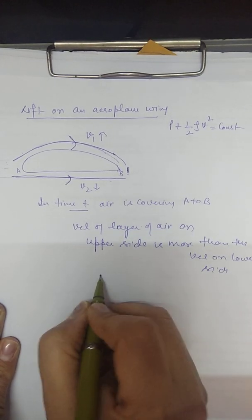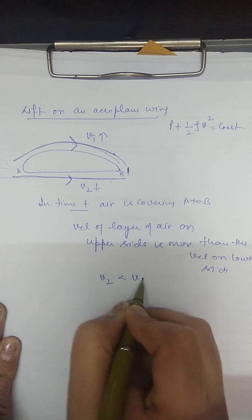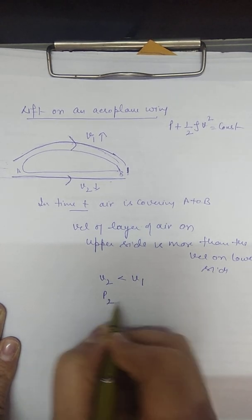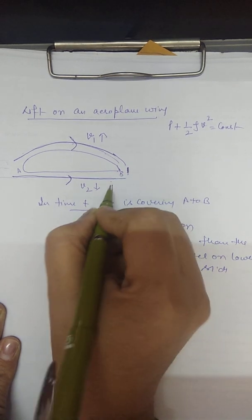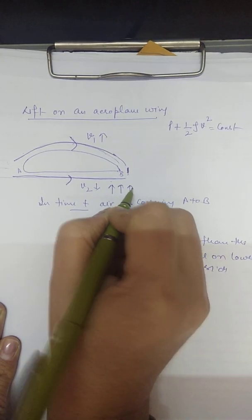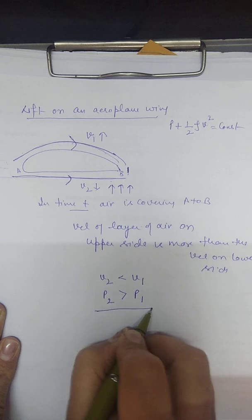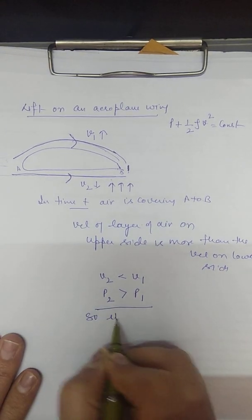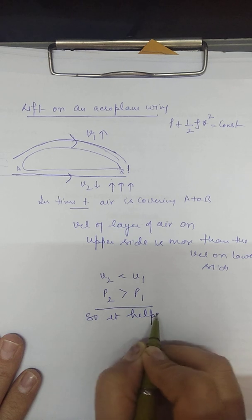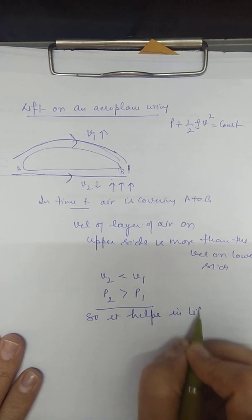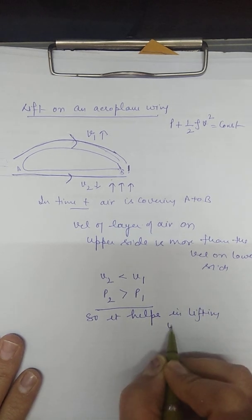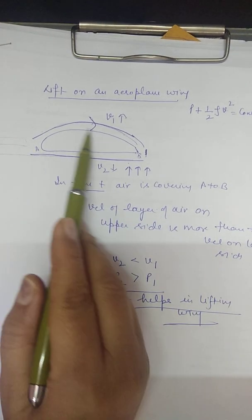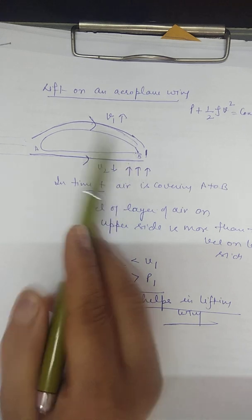This means V2 (lower) is less than V1 (upper). Therefore, pressure on the lower side is greater than pressure on the upper side. P2 is greater than P1, and this pressure difference helps in lifting the wing.